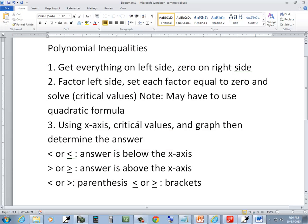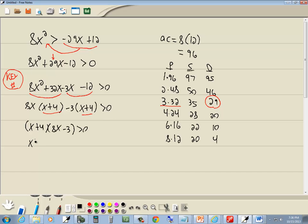So we got it factored. Then it says set each factor equal to 0 and solve. So we'll set x plus 4 equal to 0, and 8x minus 3 is equal to 0. Take the 4 over, we get negative 4. Take the negative 3 over, becomes a positive 3. Divide both sides by 8, and you get 3/8.